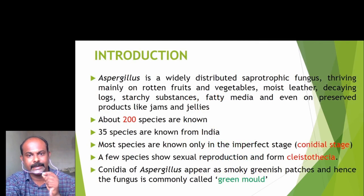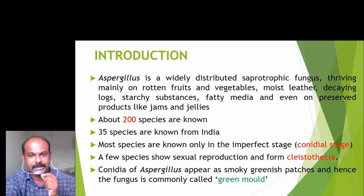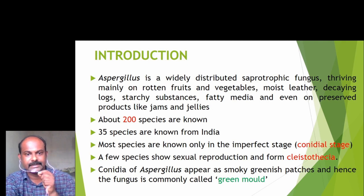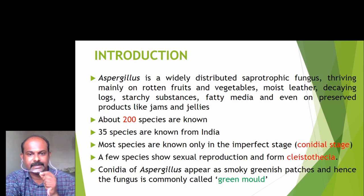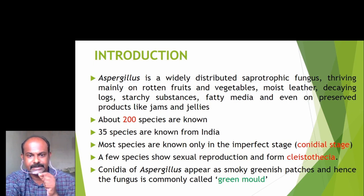Aspergillus is a widely distributed saprotrophic fungus, thriving mainly on rotten fruits and vegetables, moist leather, decaying logs, starchy substances, fatty media, and even on preserved products like jams and jellies. About 200 species are known worldwide; of these, 35 species are known from India. Most species are known only in their imperfect stage, i.e., the conidial stage.